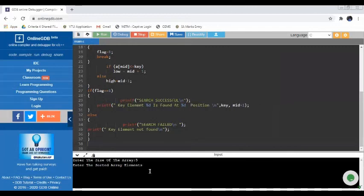Next, your program will ask you to enter the array elements in sorted order. For example, I enter 2, 4, 6, 8, and 10 as 5 elements of the array.